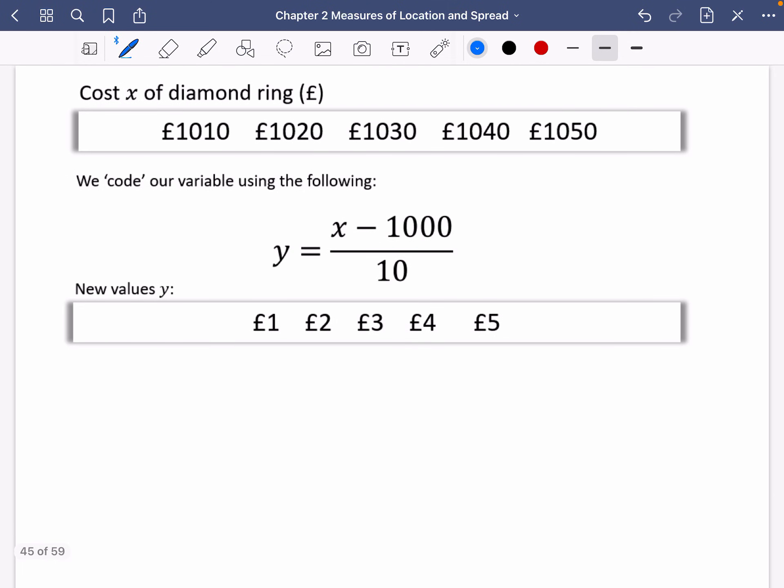Okay, so let's actually do some coding questions now with some actual data. We've done the theory. So I've got here the cost x of some diamond rings, and we've got these five values here. They're all pretty large, and you'll see in a second that the numbers you have to deal with get a little bit more complicated.